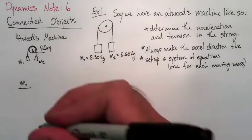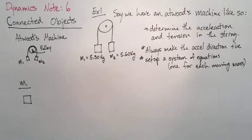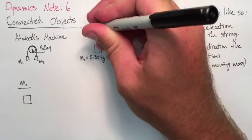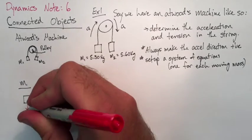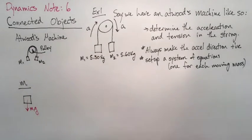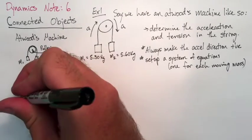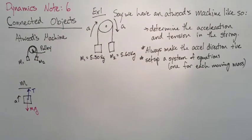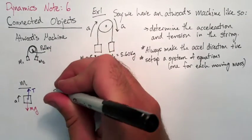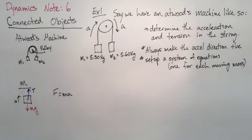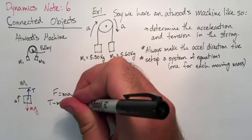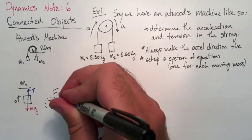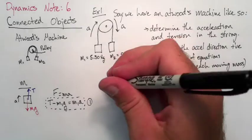So let's draw a free body diagram for mass one. We know that the acceleration is in that direction, so mass one will be moving up. There's a force of gravity m1g, tension in the up direction, and there's the acceleration. So if we make an equation for it based on F equals ma we'll get T minus m1g equals m1a. There's our equation for mass one. We'll call that equation one.